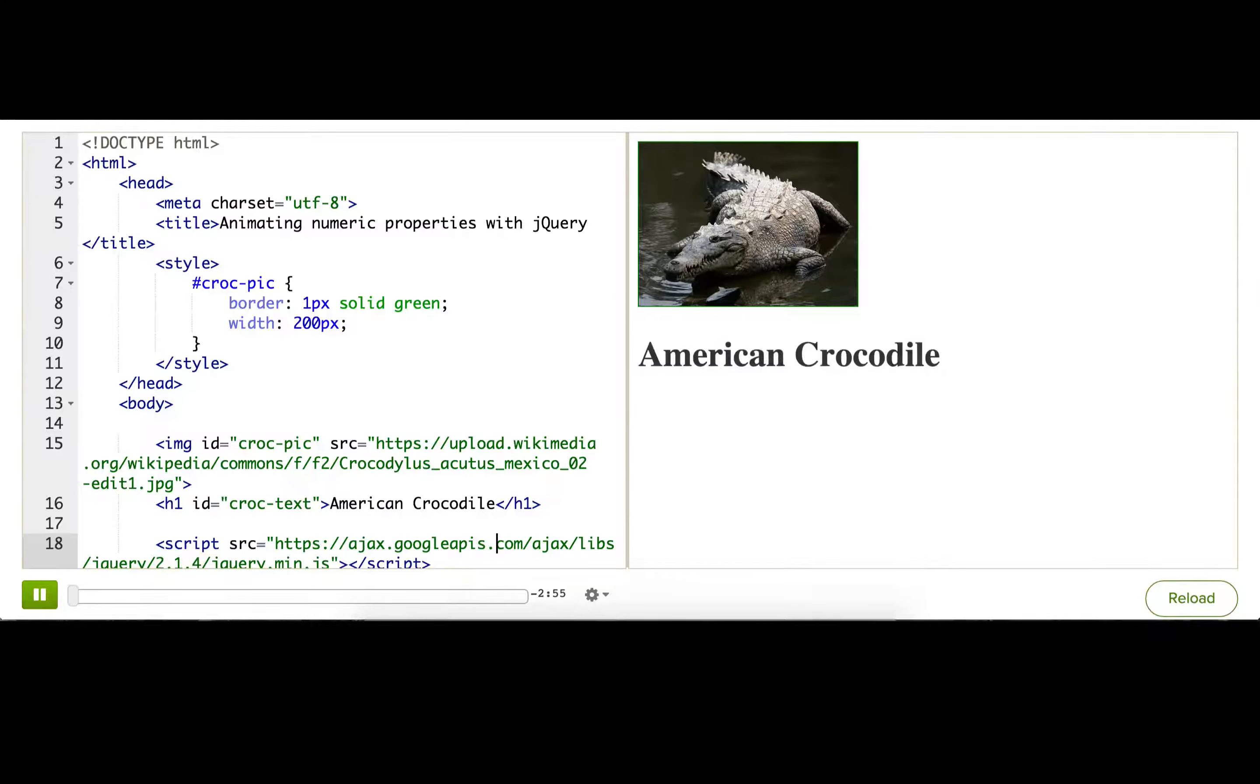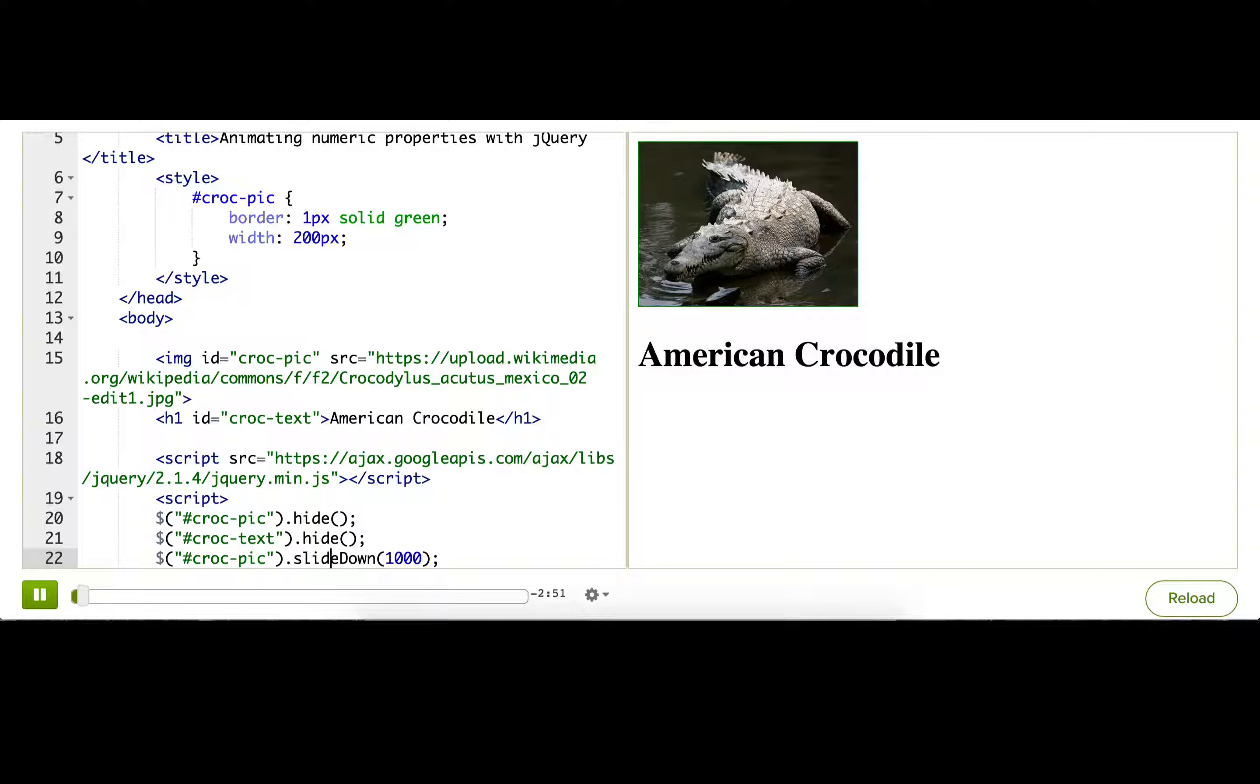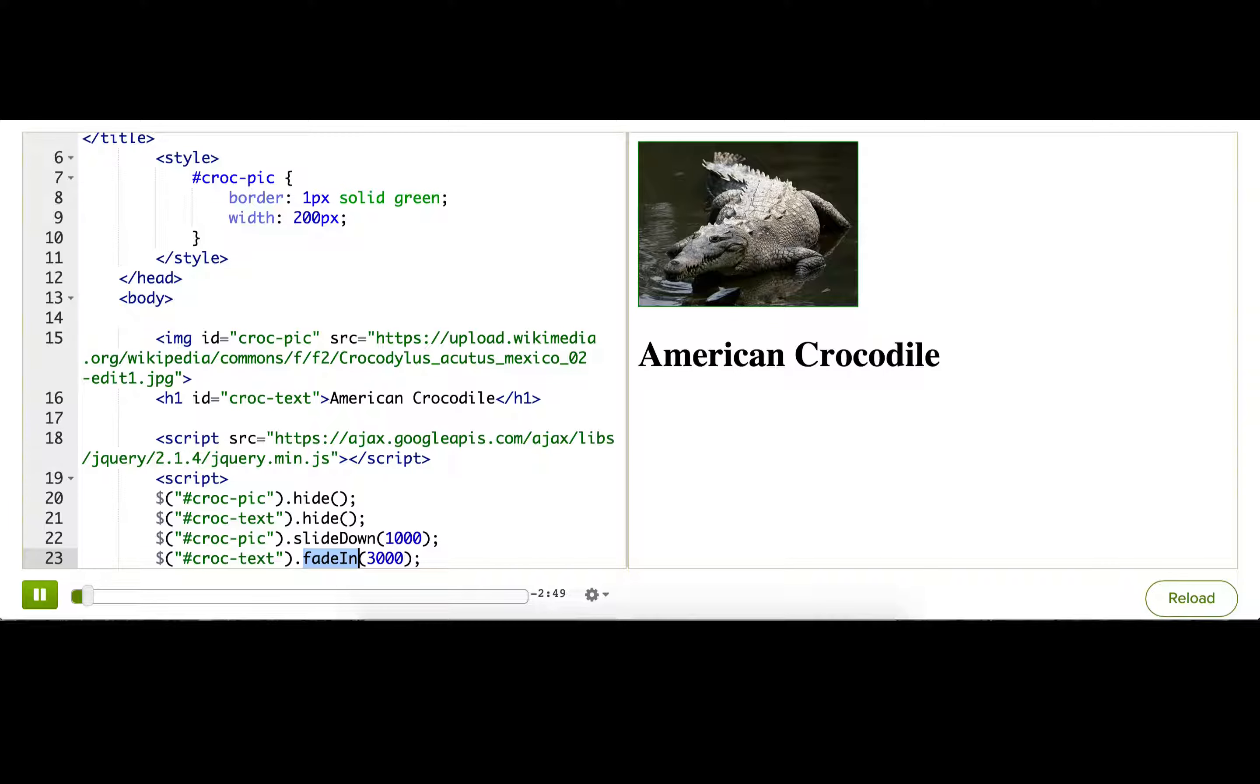In the last talkthrough, we played with a lot of neat functions that animate size and opacity, like slide down and fade in. Most of the time, those give you all the flexibility that you want for your animations. But sometimes, you want to be able to have much more control. Well, for more control, we can use jQuery's animate method.